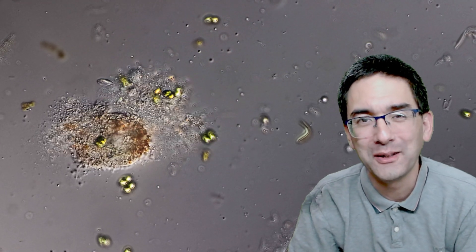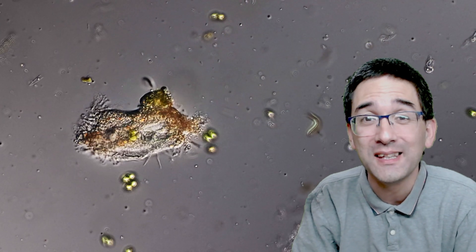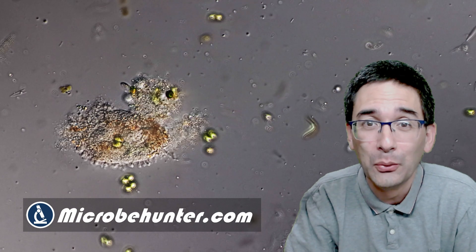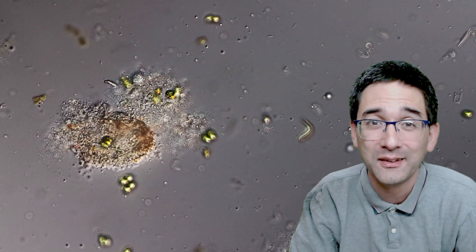Hi, hello, and welcome. Microbe Hunter here. What you see in the back right now is a ciliate, a single-celled microorganism exploding, breaking apart and spilling the cell's contents. Why is it doing that?